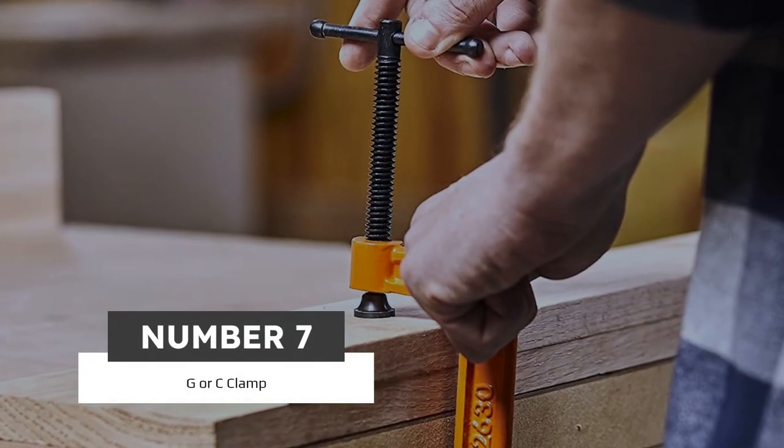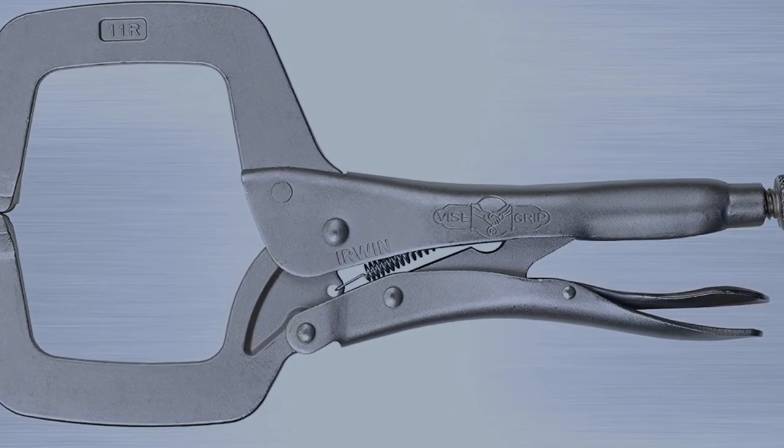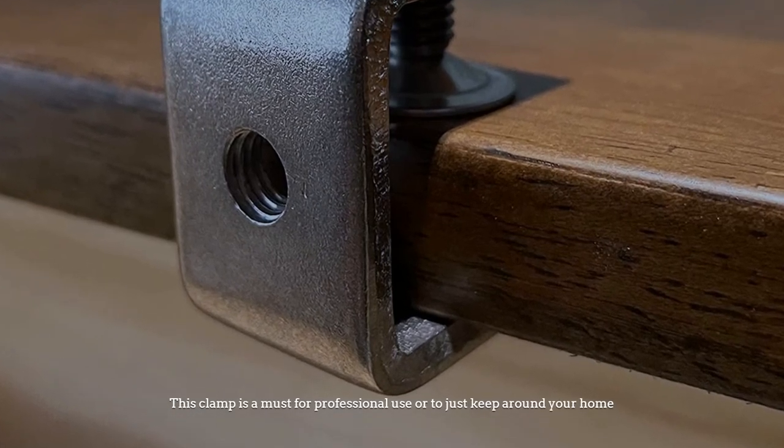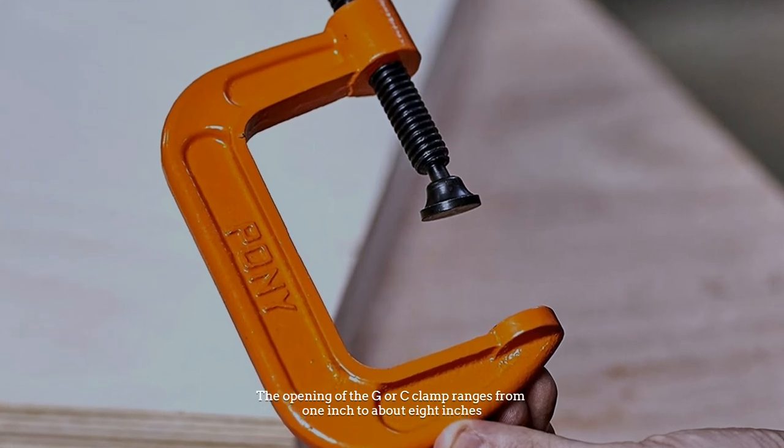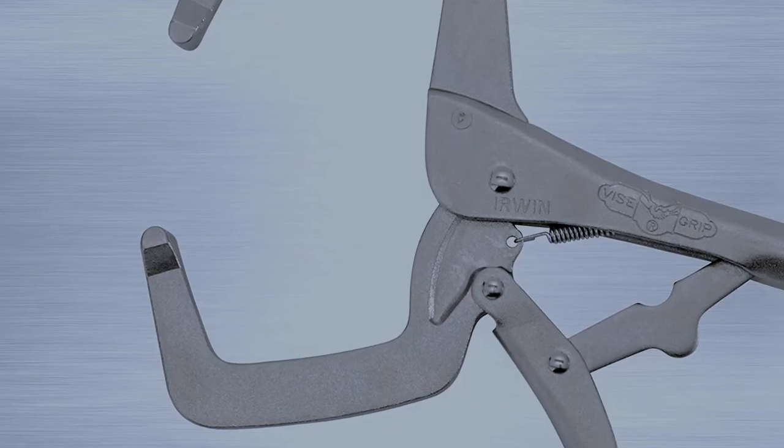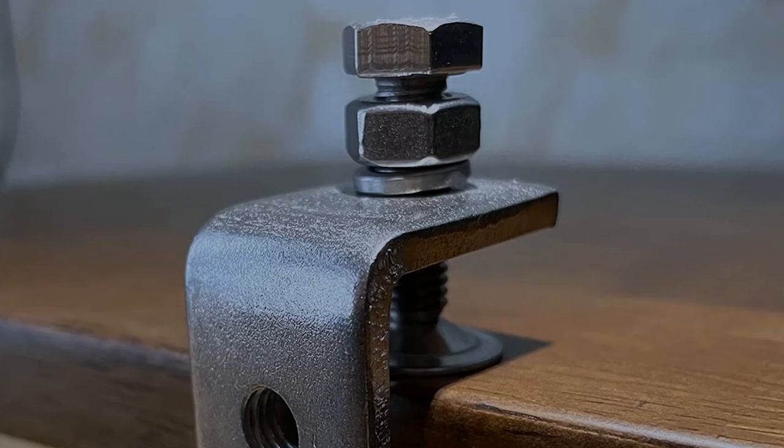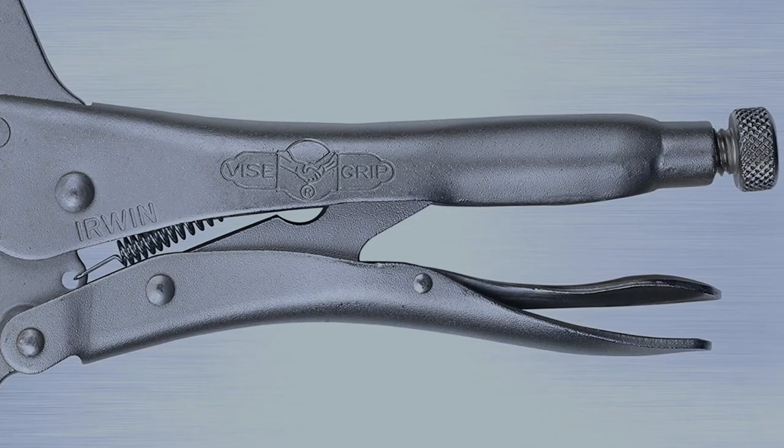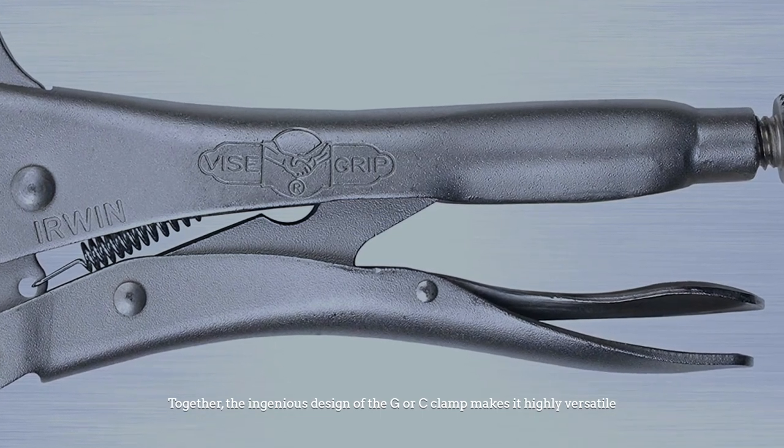Number seven: G or C clamp. This clamp is named after its G or C shape. This clamp is a must for professional use or to just keep around your home. The opening of the G or C clamp ranges from one inch to about eight inches. This range makes it perfect for a variety of projects. Meanwhile, the swivel head allows the screw section to clamp onto many surfaces. Together, the ingenious design of the G or C clamp makes it highly versatile.